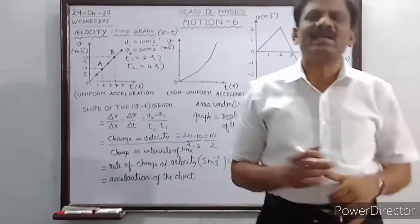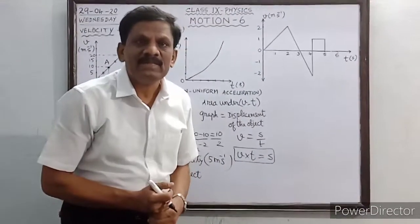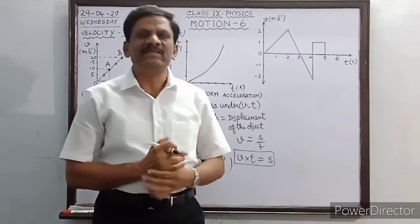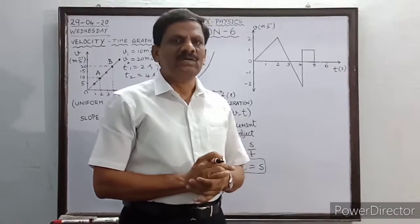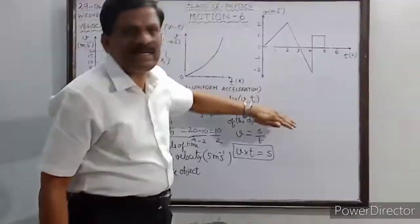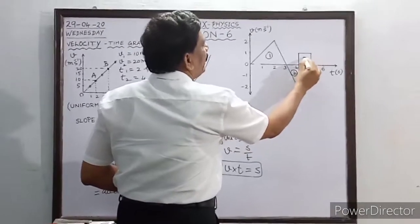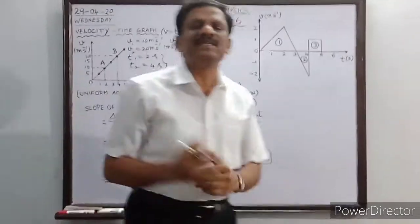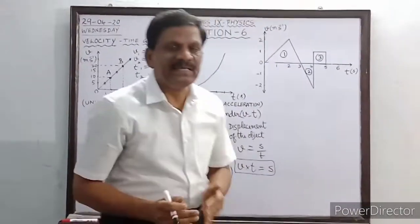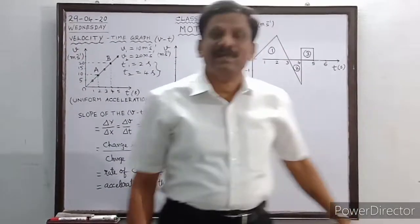Displacement is a vector quantity and can be positive, negative, or zero. Speed is a scalar because distance is a scalar; velocity is a vector because displacement is a vector. Areas above the x-axis represent positive displacements and must be added, while areas below the x-axis are negative and must be subtracted. In this diagram, areas 1 and 3 are above the x-axis (positive) and area 2 is below (negative).